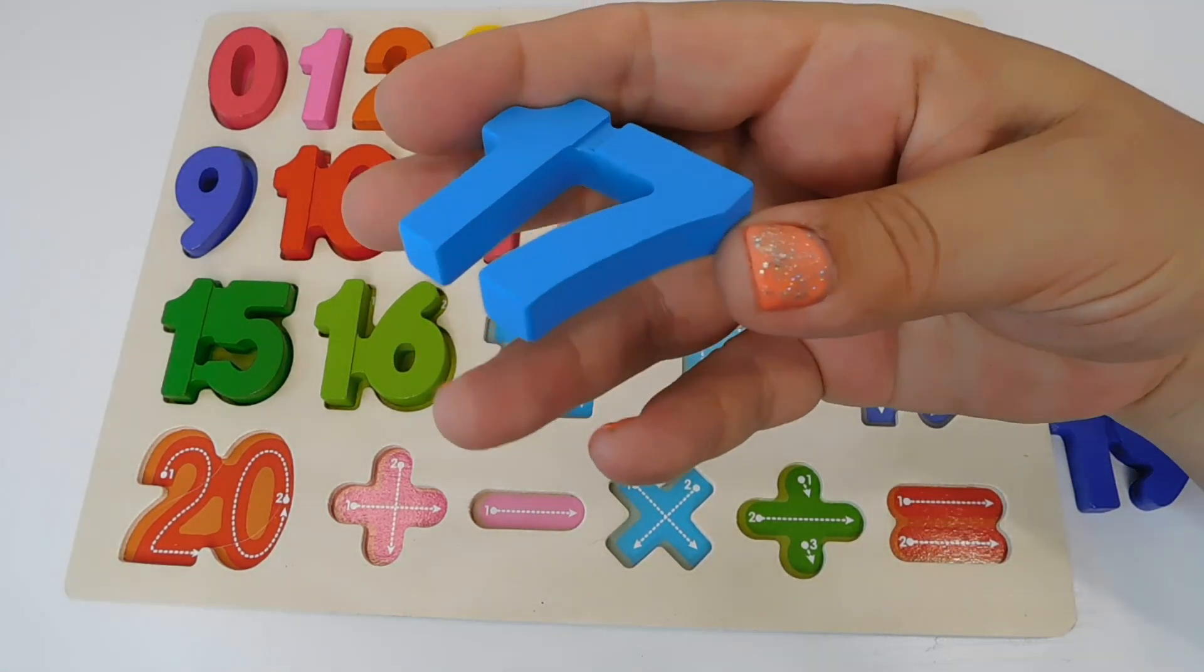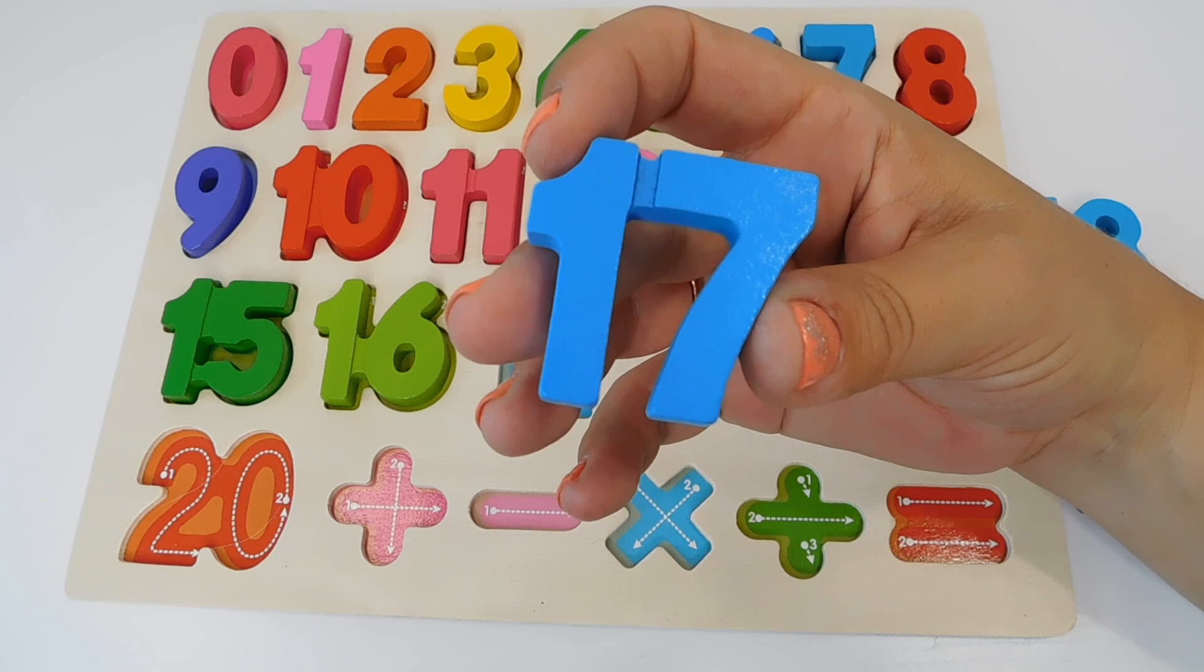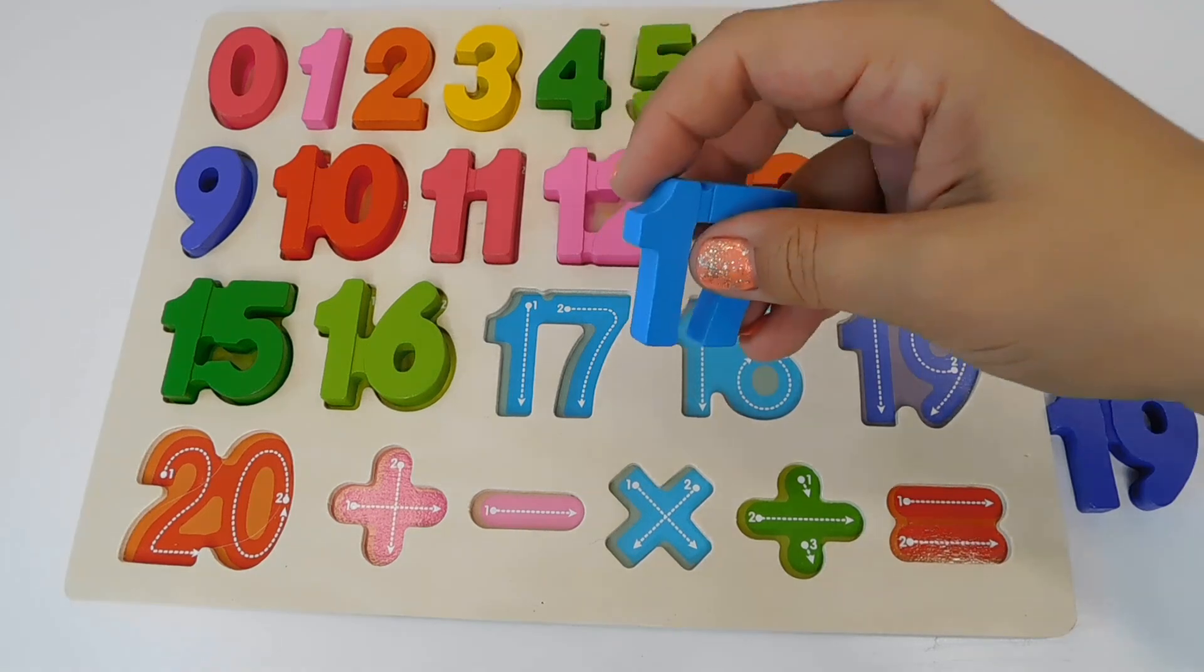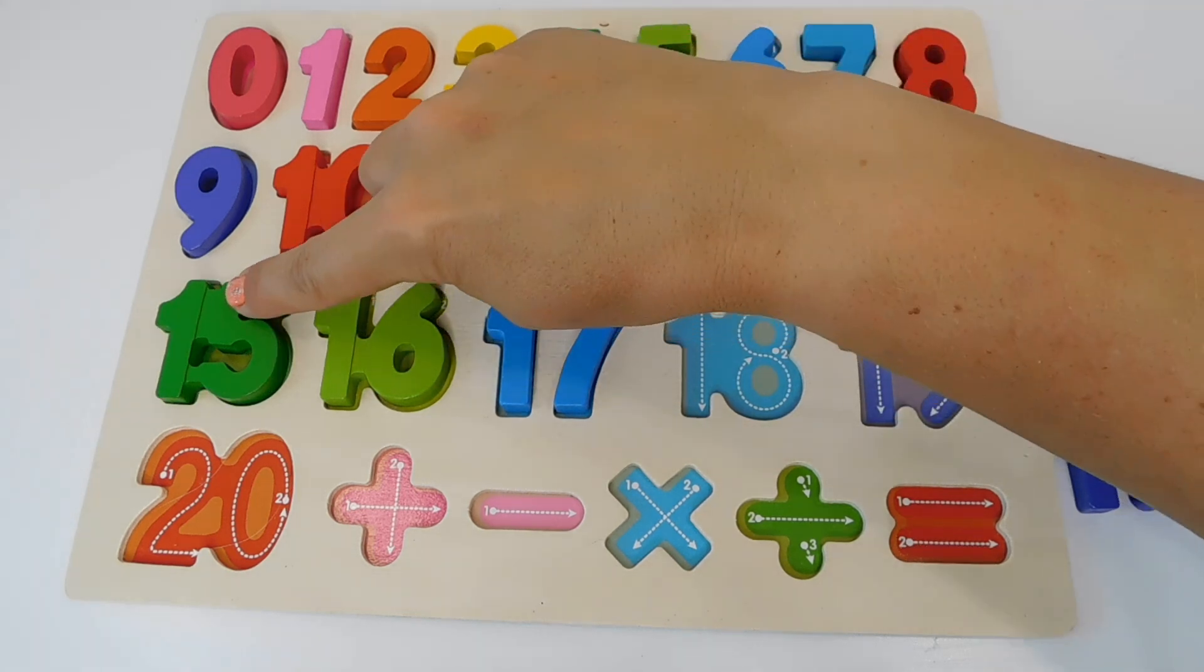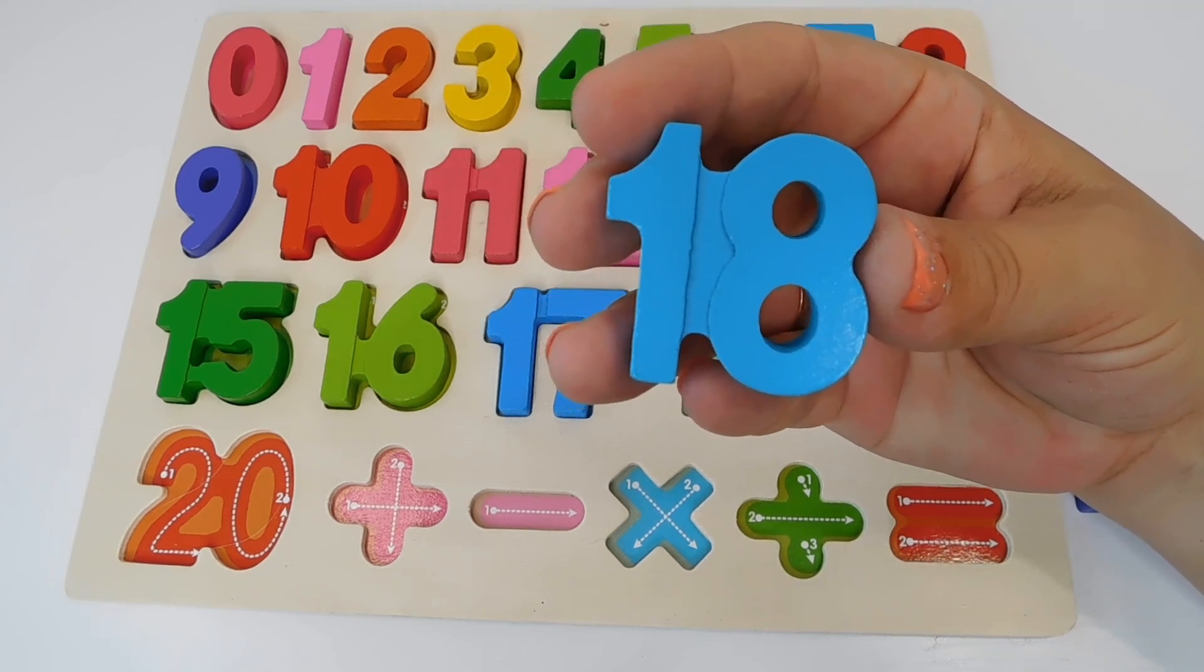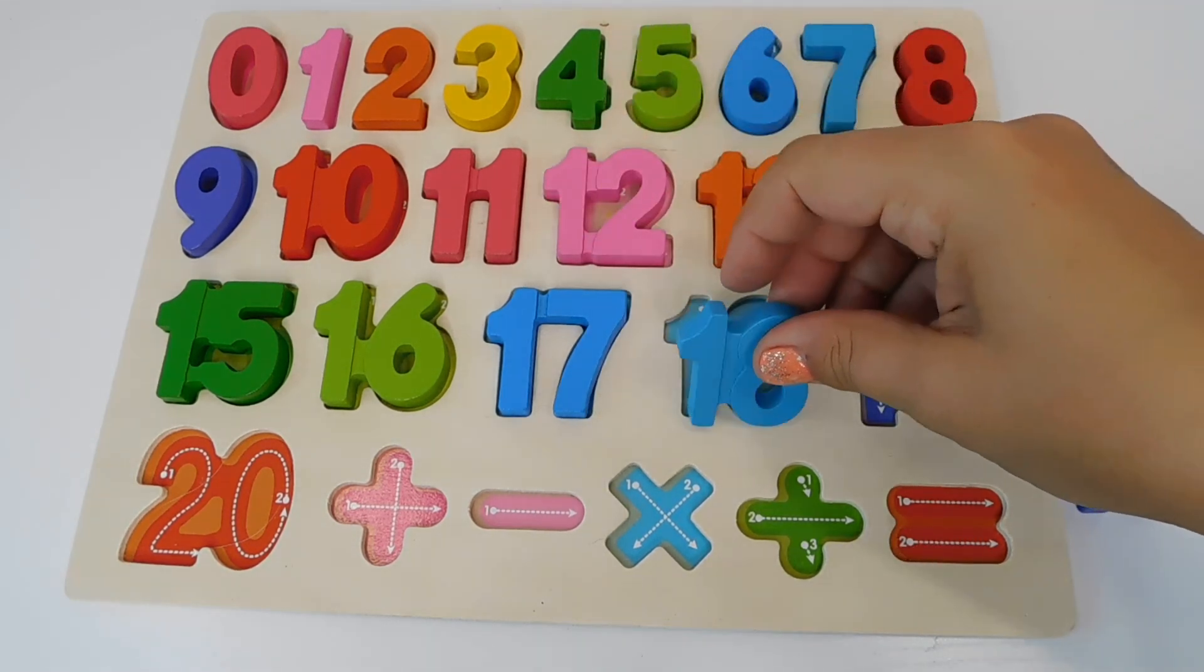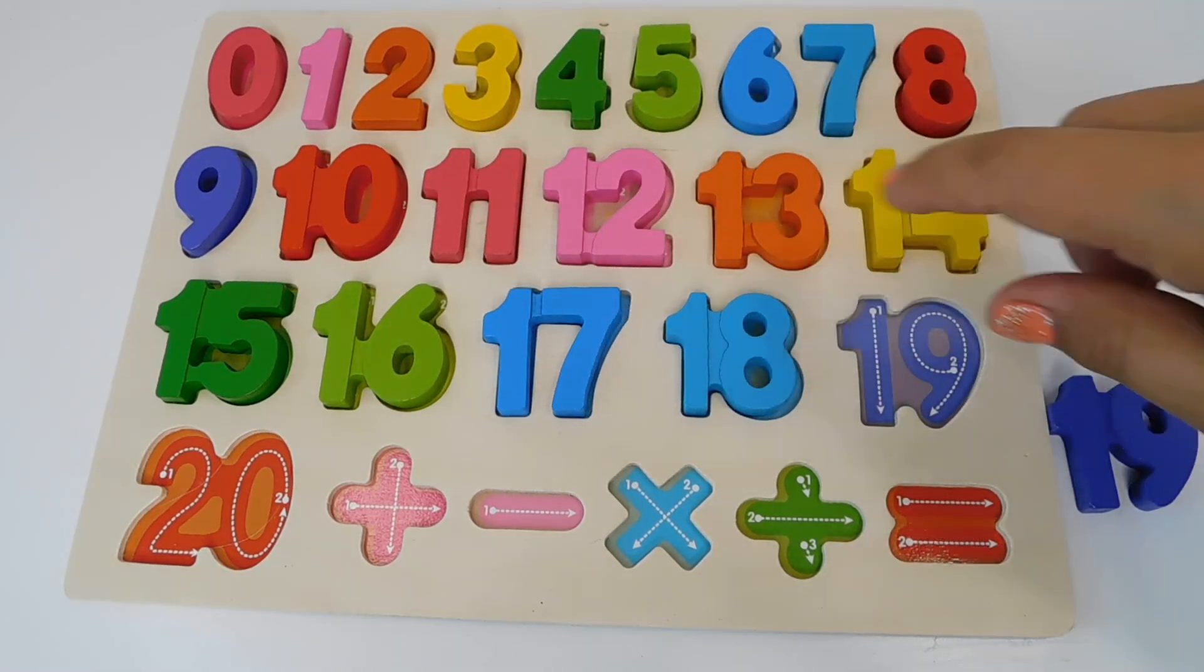Our next number is number 17. This is a blue 17. A 1 and a 7. 17 goes here. 15, 16, 17. Next is 18. Light blue 18. It goes here. 15, 16, 17, 18.